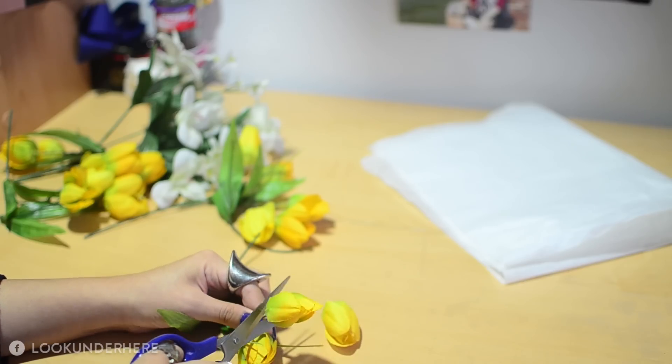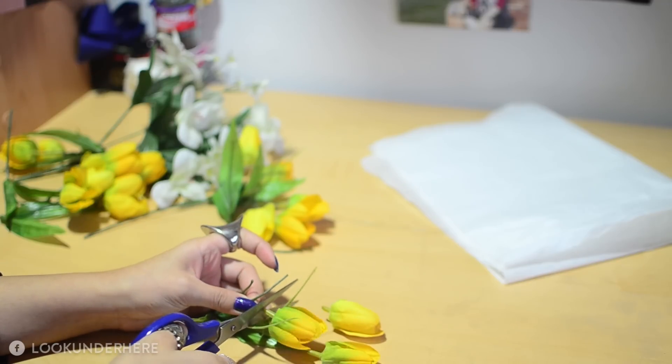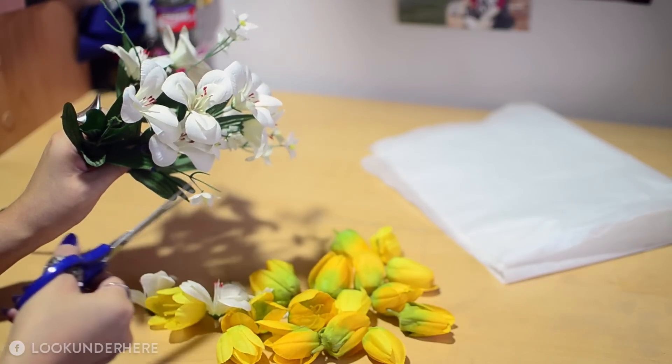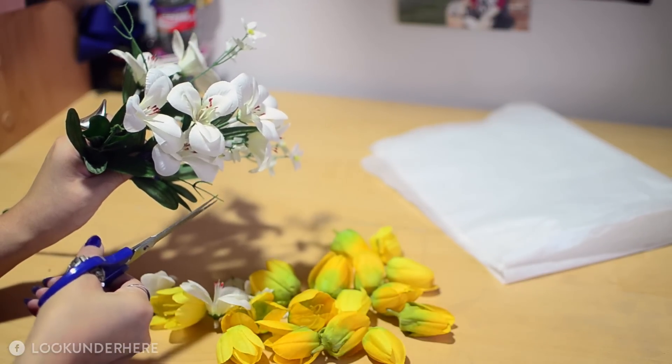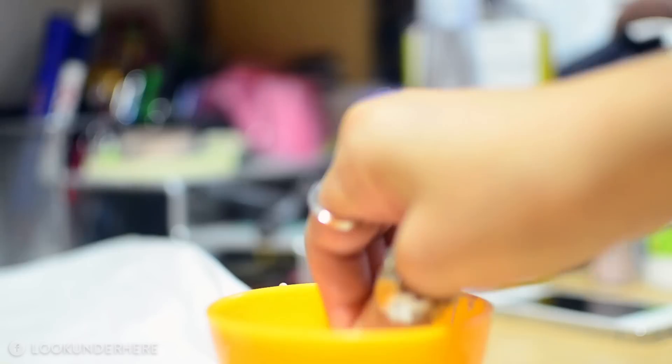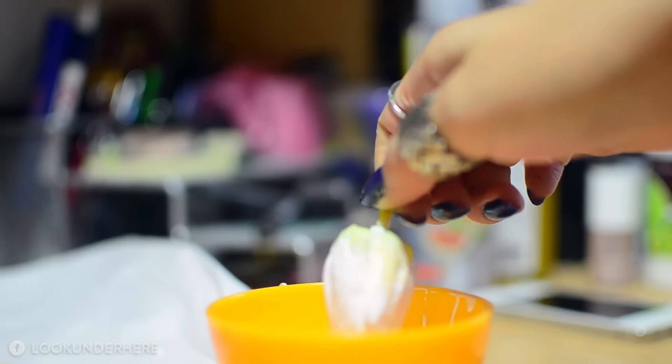Start by trimming off all the stems on your flowers. Then mix your acrylic with a little bit of water. Dunk each flower into the paint, making sure you coat the insides as well.